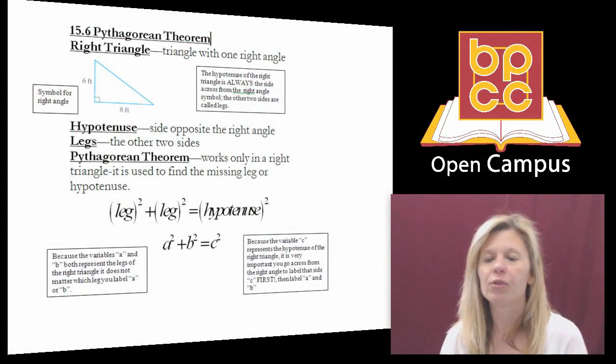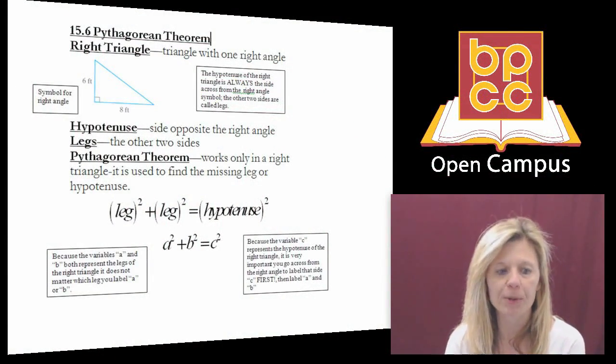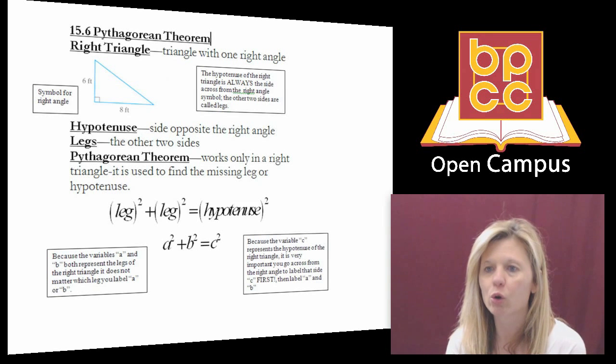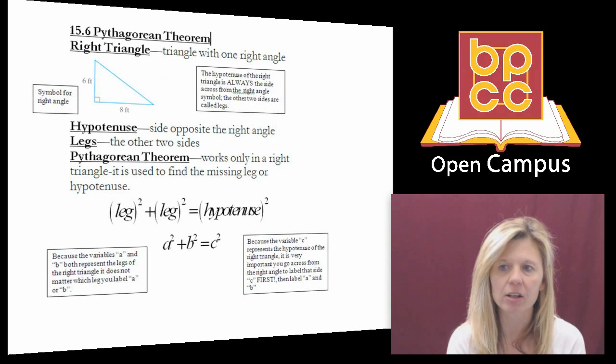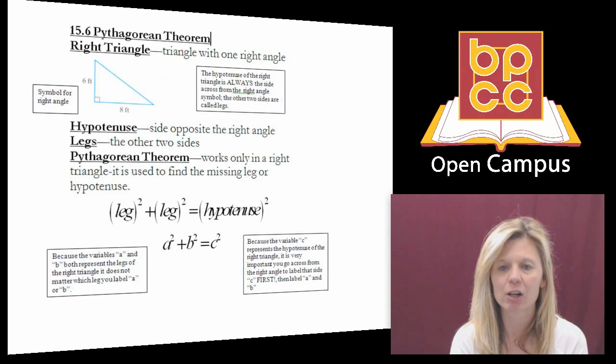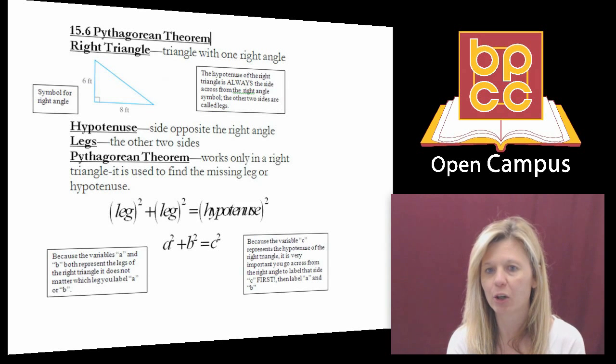If you look here, this formula we're going to work today called Pythagorean Theorem is only used for a right triangle. And if you recall, a triangle that's right has that little 90 degree angle in the corner, that little box. And the important thing to know is when you're dealing with a right triangle,